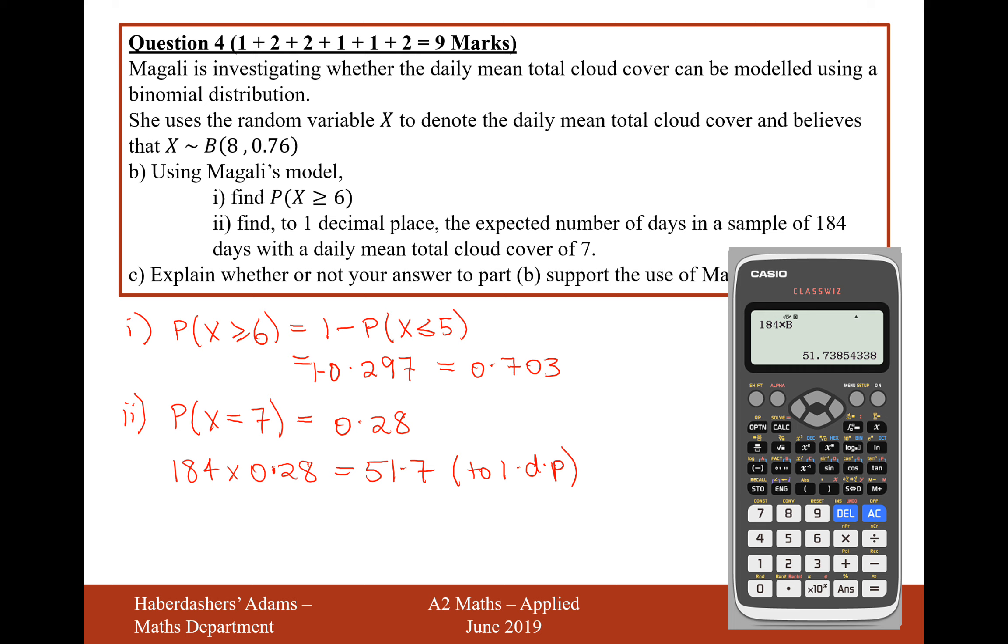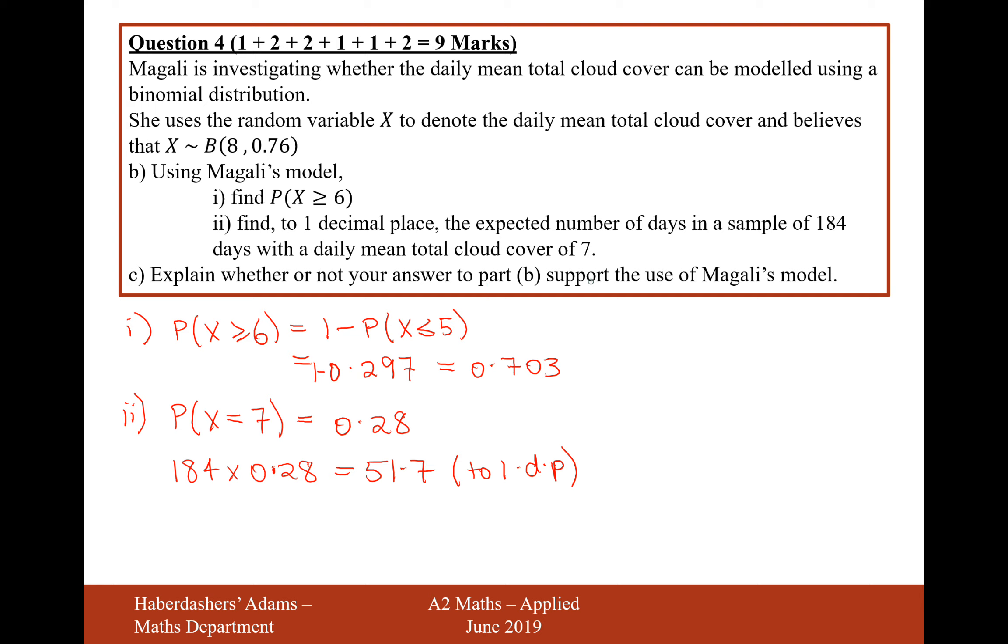Okay, so now that we have calculated bi and bii, we can now move on to part c, which is explain whether or not your answer to part b supports the use of Megali's model. Well, if we have a look back at our calculations from before, we worked out that the probability of 6 or more octaves was 0.7127 to four decimal places, compares well with 0.707, that's our answer for part ii, and then the amount of days that had 7 octaves on it was 52, so 52 compares well with 51.7, so the model is good.